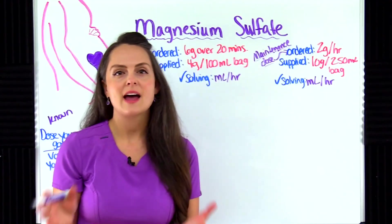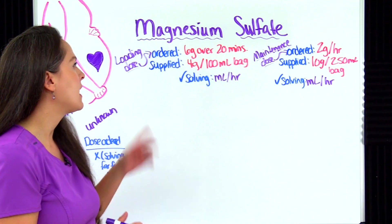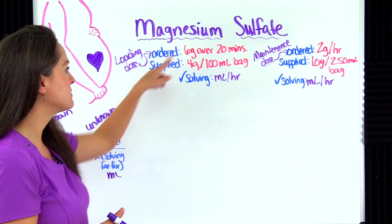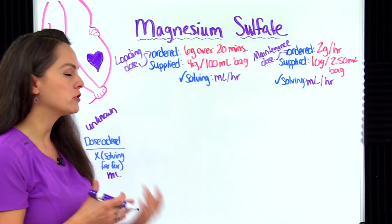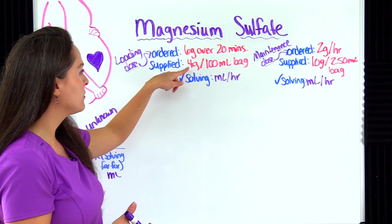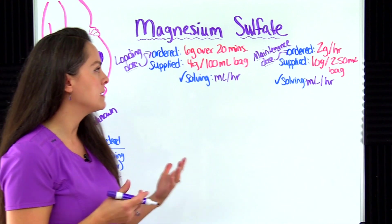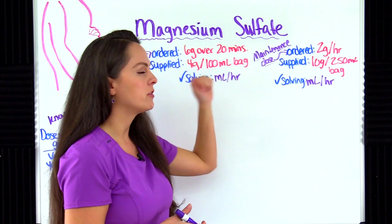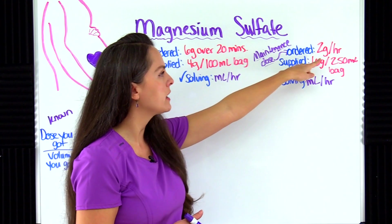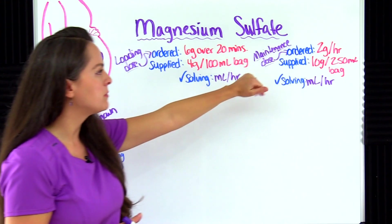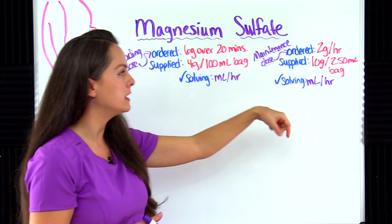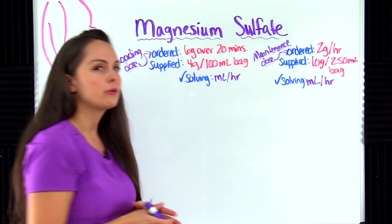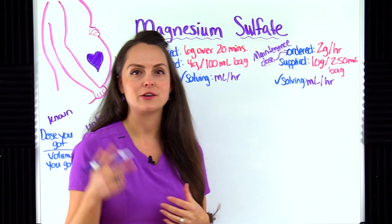Problem 3: a patient with eclampsia needs to be started on IV magnesium sulfate. The healthcare provider wants a loading dose of six grams over 20 minutes, and you're supplied with a bag reading four grams per 100 mL. Then, once complete, a maintenance dose of two grams per hour using a 10 gram per 250 mL bag. For both of these you're solving for milliliters per hour, so you'll get two different answers.